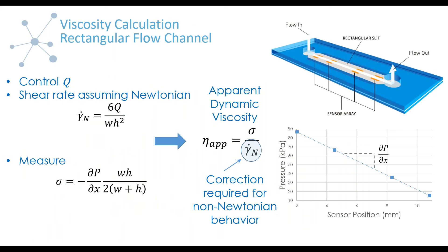We're going to have an intervening slide here before we get onto — once we've collected the data and found that it's non-Newtonian, as it often is for high concentration therapeutic products — how are we going to handle that? This correction is specific to our technology. Our technology is a microfluidic-based viscometer, so we're looking at flow through a rectangular flow channel. We always emphasize that viscosity is always calculated, and when the software is doing the calculation, we don't know ahead of time whether it is or is not non-Newtonian. So the initial data from our systems will actually be assuming Newtonian behavior.